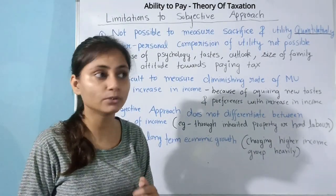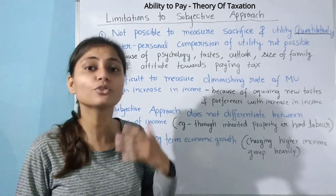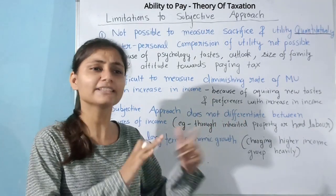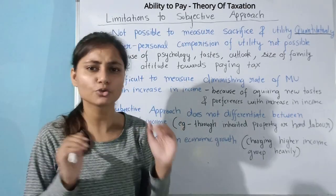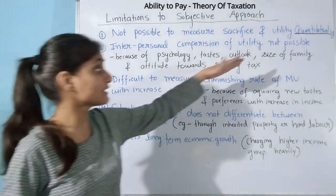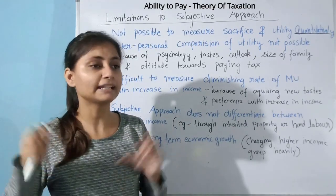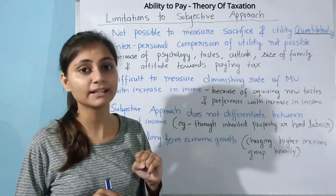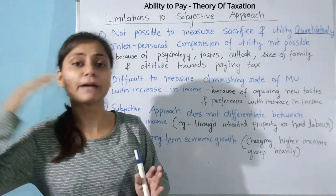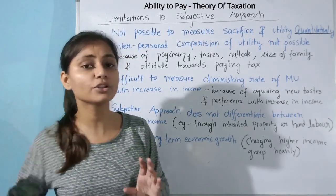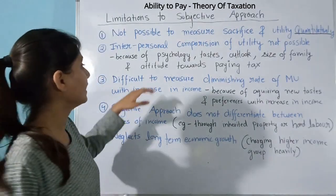People get utility from many different things based on their tastes and preferences. A minimalist who needs very little will seem to sacrifice nothing. Meanwhile someone with expensive tastes will feel greater utility loss from the same tax. Family size also matters — if two people have similar incomes but one supports five family members and the other only two, the one with a larger family should logically pay less tax, but this isn't considered in the subjective approach.